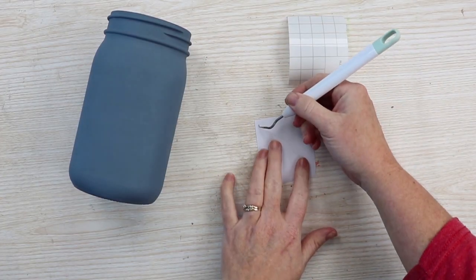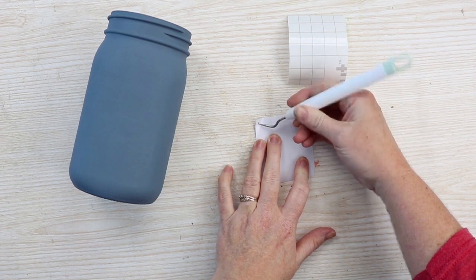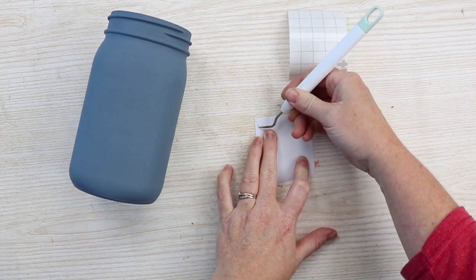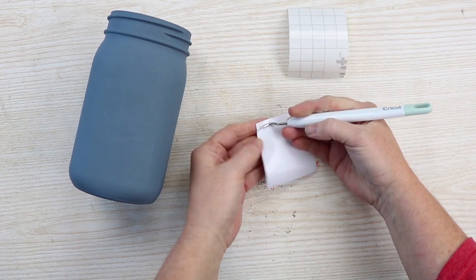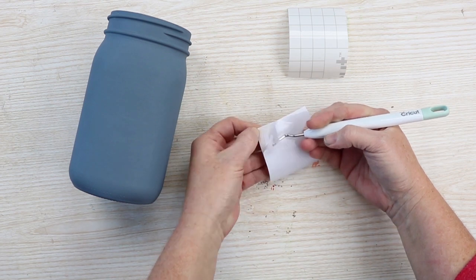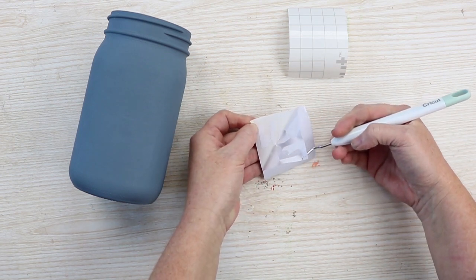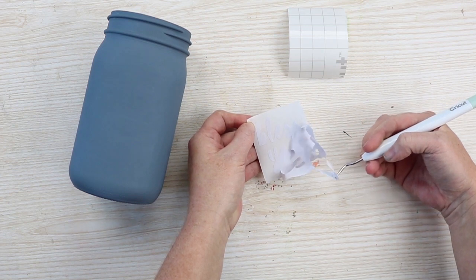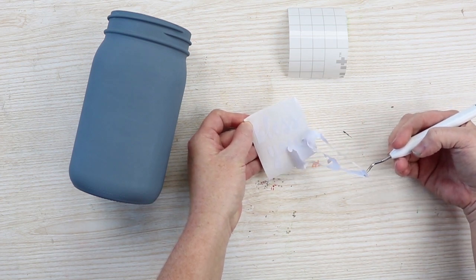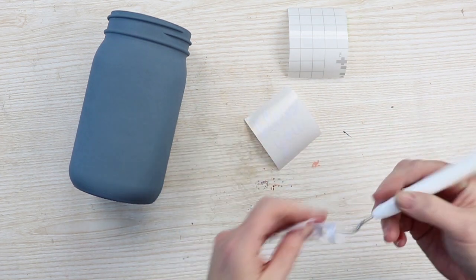Once those are cut, I'm just going to weed away all the excess vinyl. Weeding tools make this easy but they are optional, and you just want to weed away all the excess from the outside as well as the centers of any letters from your design. You can use whatever design you would like as well as whatever color of vinyl.